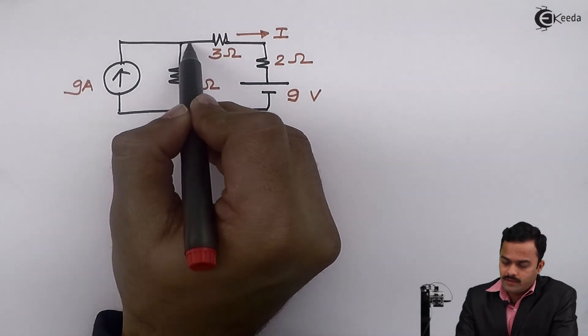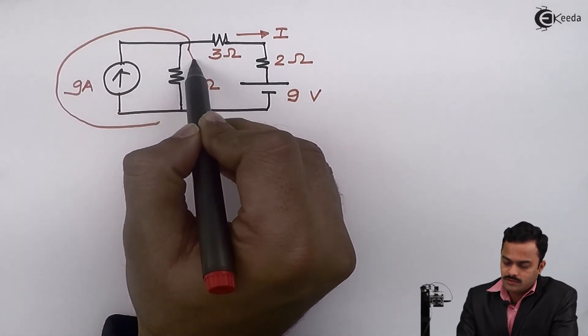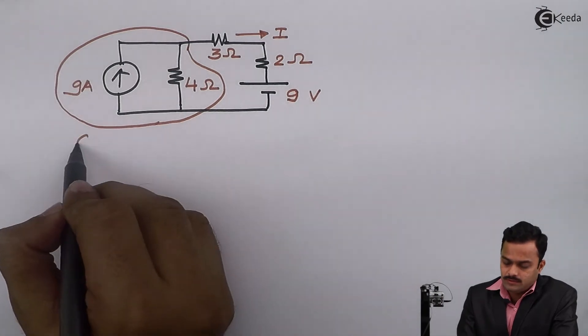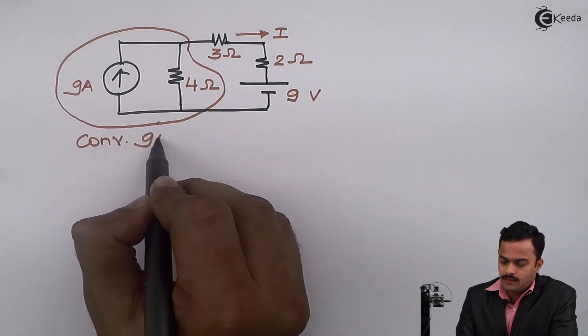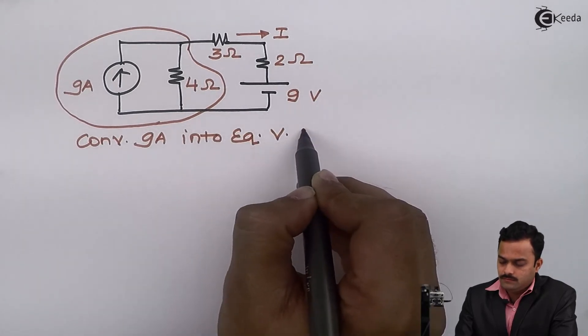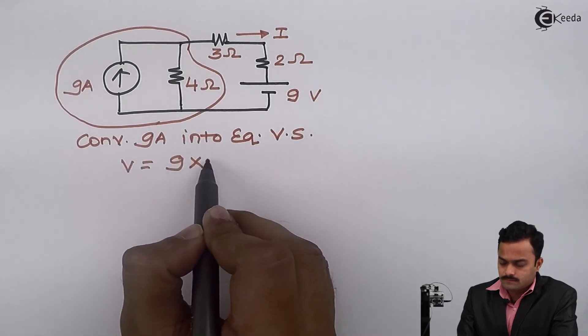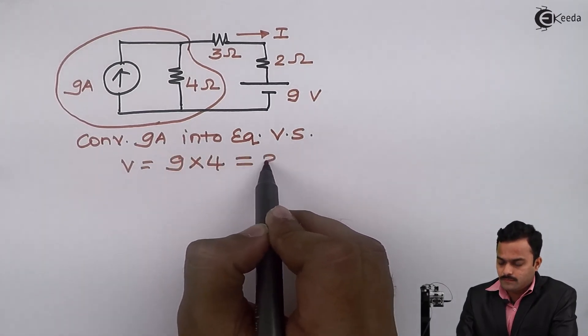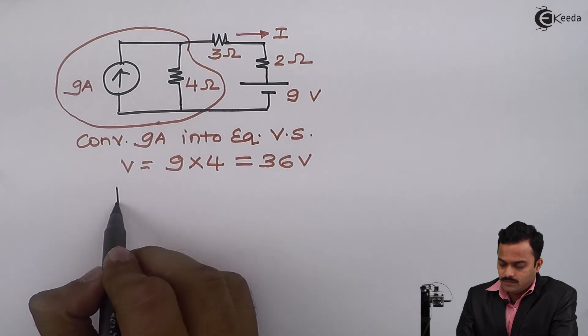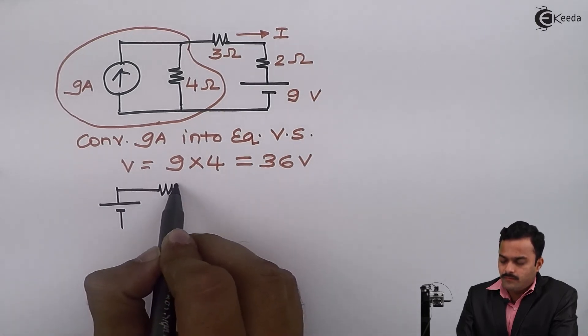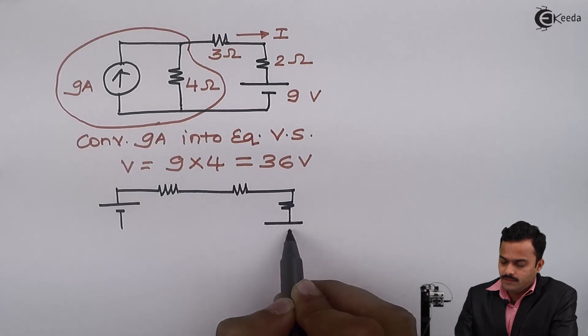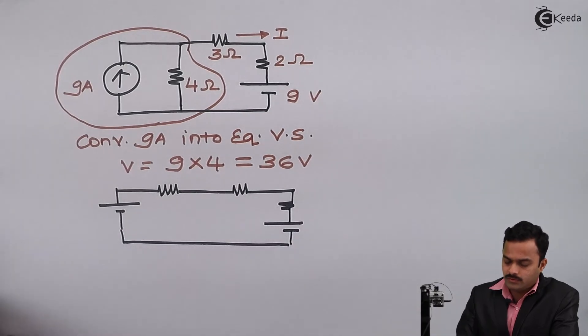Now we are very close to the answer. When we convert this current source into a voltage source, I will get a simple one-loop circuit. Let's convert 9 amperes into an equivalent voltage source. The voltage value will be 9 multiplied by 4, which is 36 volts. Let's redraw the circuit. 36 volts and 4 ohms come in series, and the rest of the circuit will be as it is.